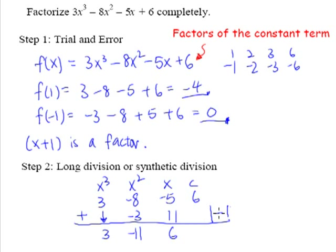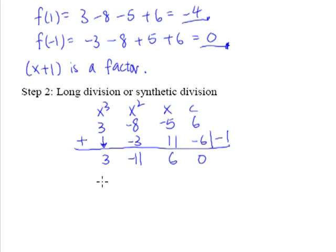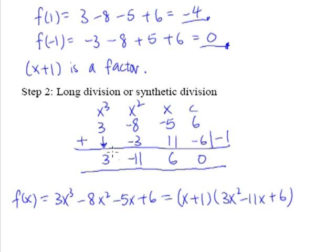Multiply negative 11 by negative 1 gives positive 11. Adding to negative 5 gives positive 6. Multiply 6 by negative 1 gives negative 6, and adding to 6 gives 0. Now we can decipher what this synthetic division tells us. We can see the quotient. So our fx, which is 3x cubed minus 8x squared minus 5x plus 6, can now be written as the product of (x plus 1) and (3x squared minus 11x plus 6).